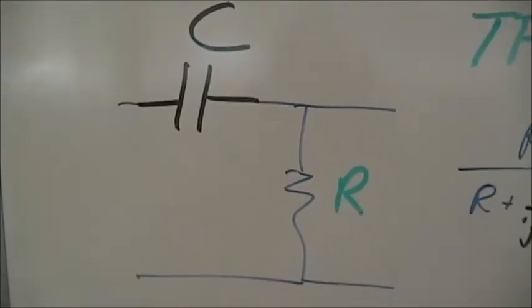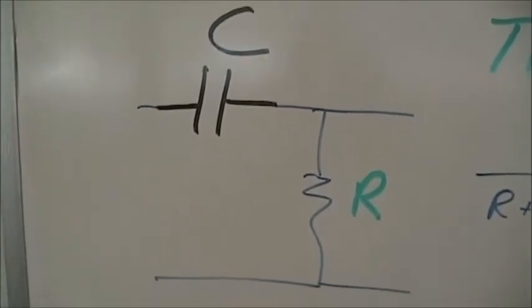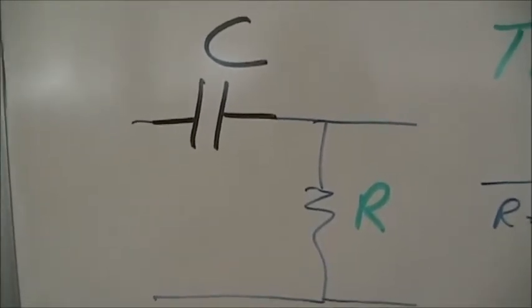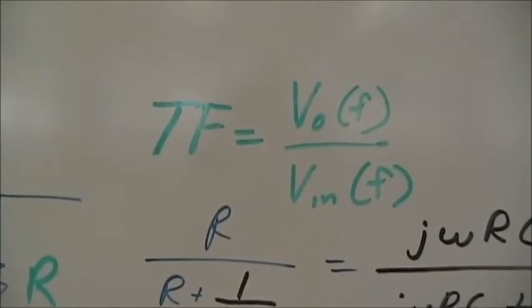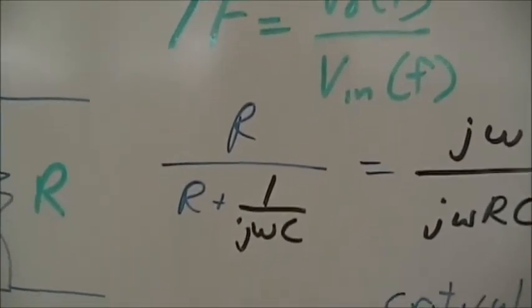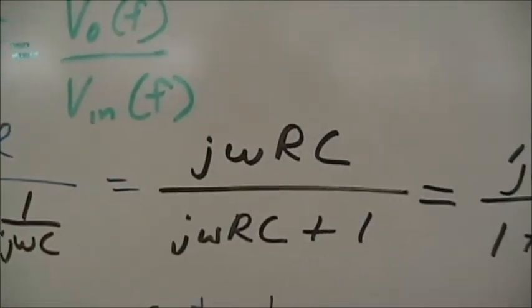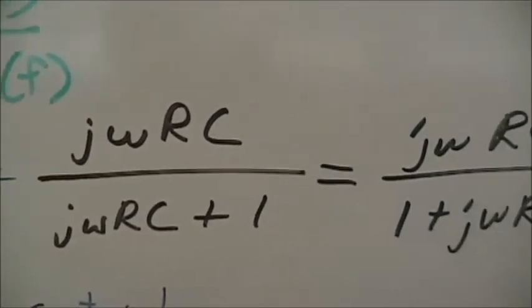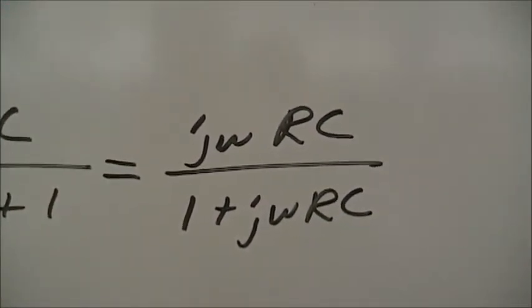So the second circuit we will check is an RC filter, CR actually. This is a high-pass filter. Transfer function, same setup, Vout over Vin. But now we have R over R plus 1 over jωC. This becomes jωRC over jωRC plus 1, and finally jωRC over 1 plus jωRC.